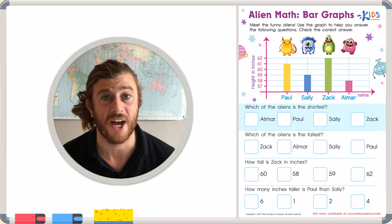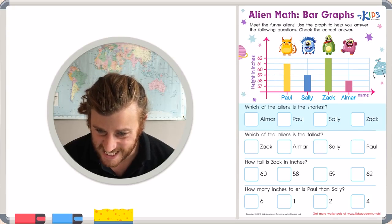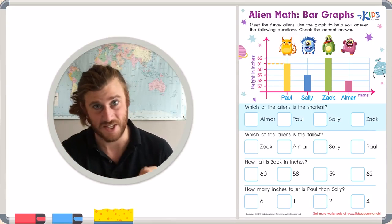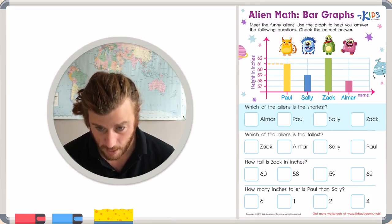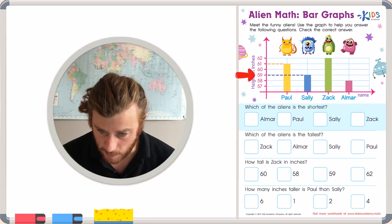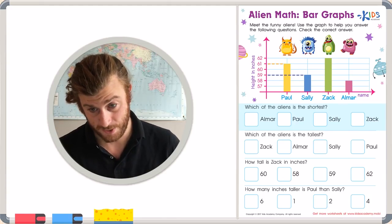Let's take a look at each alien and see. Our first alien, Paul, is at exactly 61 inches tall. Already just by looking I can tell he is not the shortest alien. Our next blue alien, Sally, is 59 inches tall. She is shorter than Paul, but are there any shorter aliens?